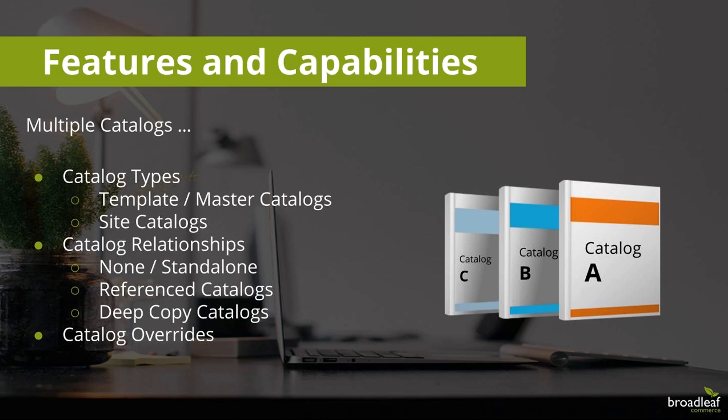Within the catalog types, we have two key catalogs you can define. You can do a template catalog, or what we sometimes call a master catalog, which allows you to put content at a level where it can be abstracted out and reused across different sites, as well as serve as the master of separate catalogs. You can have multiple template catalogs, giving you the ability to set up a hierarchy.